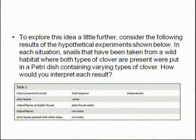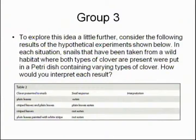Here's the experiment. In one condition, we give plain leaves. In the next, we give striped leaves and plain leaves. In the next one, we give striped leaves only. And in the final one, we give plain leaves painted with a white stripe. In the plain leaves condition, the snails eat the leaves. When given striped and plain leaves, the snails choose the plain leaves and avoid the striped leaves. When given only striped leaves, the snails don't eat them. And when plain leaves are painted with a white stripe, they're not eaten either.